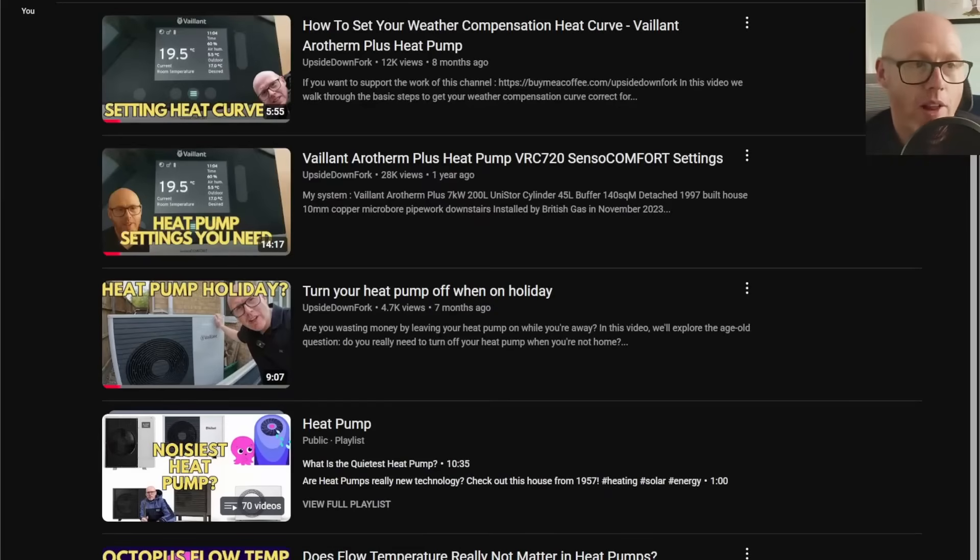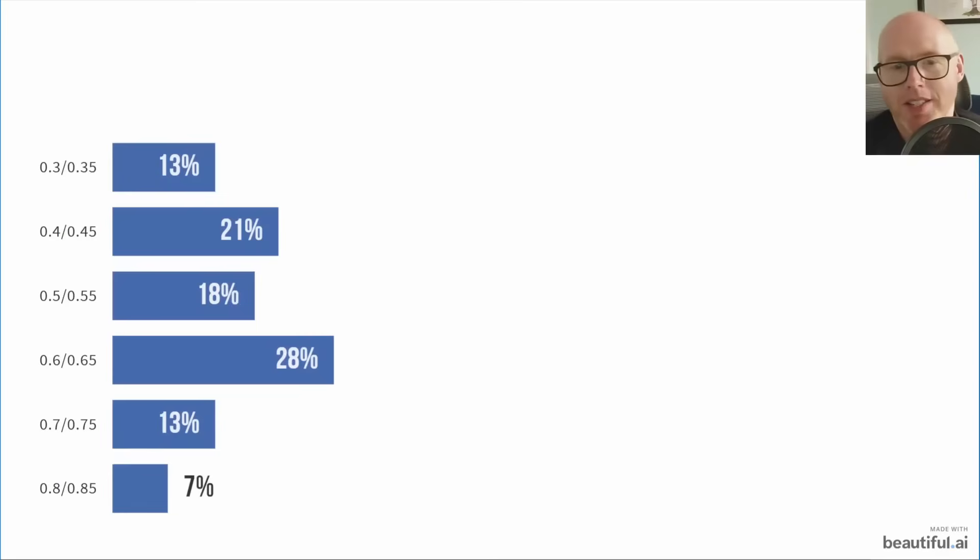And so following that I started with a little poll in the Vaillant Arotherm Plus heat pump group and I asked everyone what is your heat curve set to and there were hundreds of respondents to this survey. As you can see 0.6 or 0.65 was the biggest group of people and interestingly a lot of the people who complained about my recommendation of 0.6 they said people are going to end up cold.